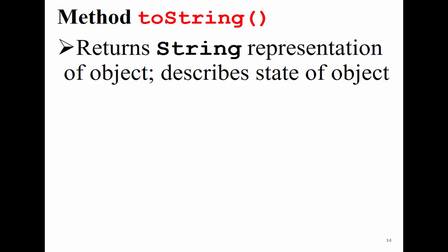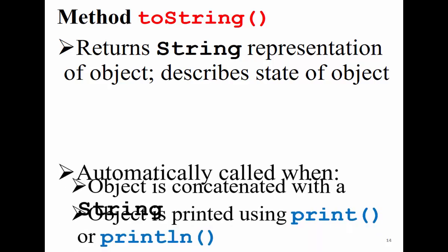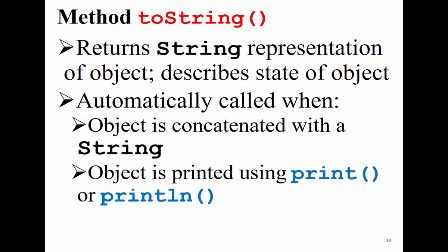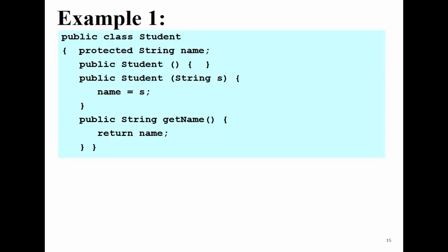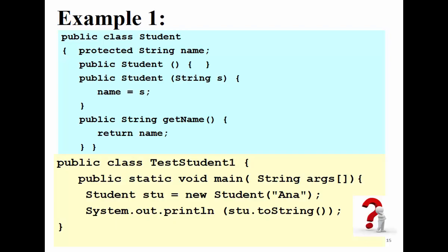Let's start with the first one: toString. This method returns a string representation of your object. Whenever you print an object using println, it will automatically call toString. For example, we have a class Student with a protected String name, a default no-argument constructor, and a one-argument constructor that takes a String s and assigns it to name. We also have a public String getName() method that returns the name of the student.